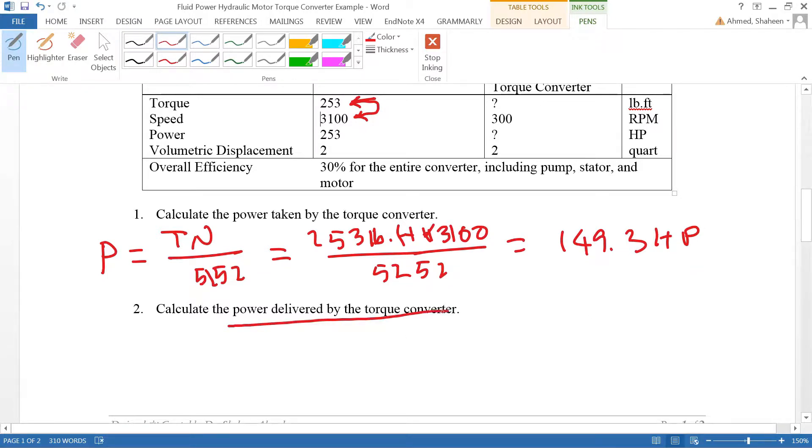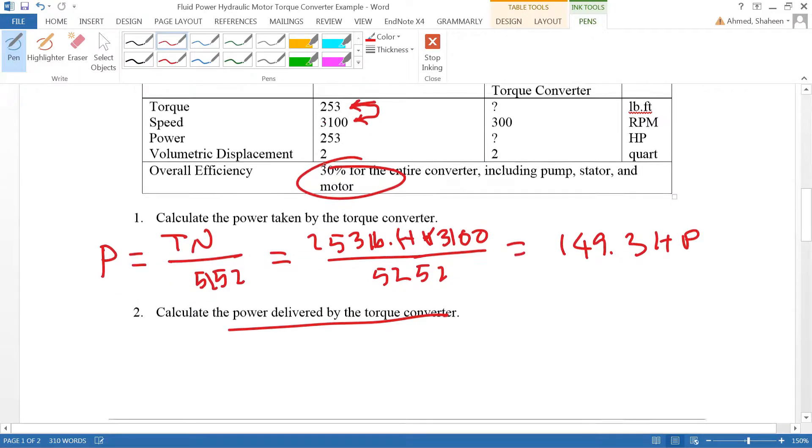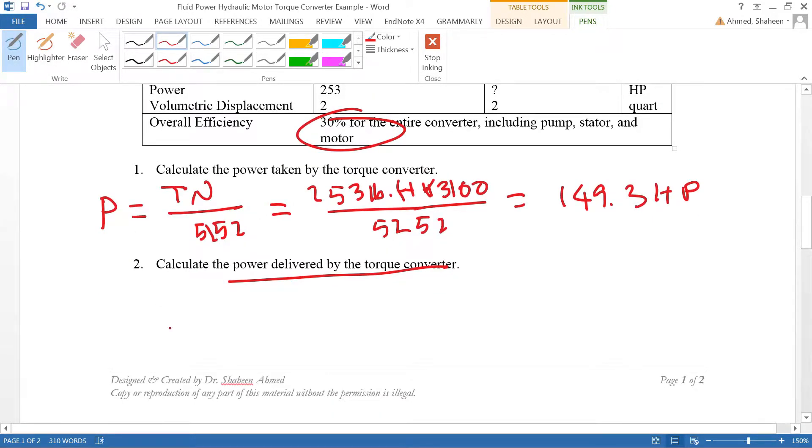Then it says calculate the power delivered by the torque converter. It's 30% efficient, very less efficient at this configuration. The overall efficiency is the power output divided by the power input. Efficiency is 30%.